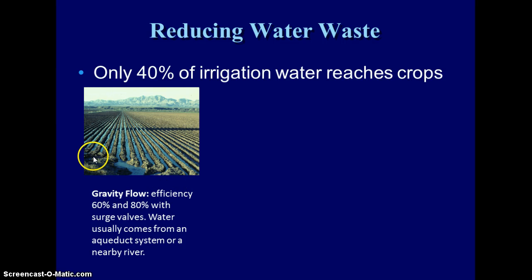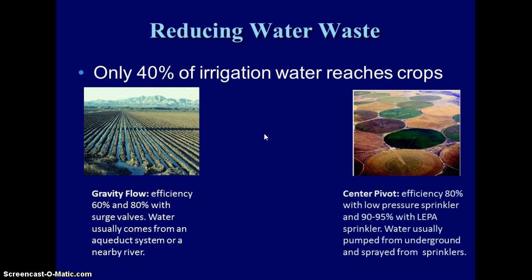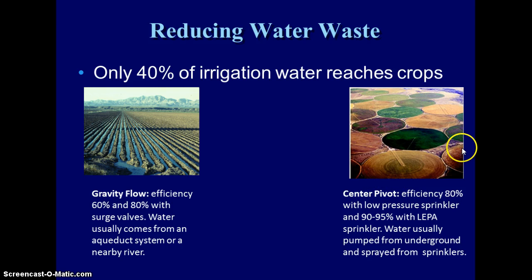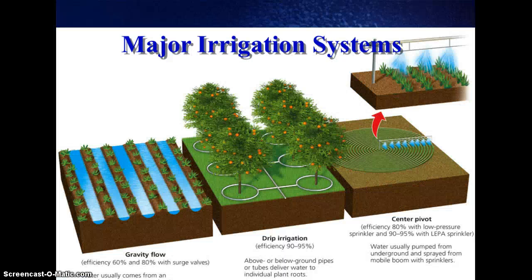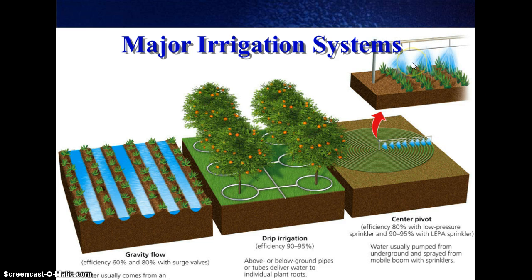With gravity flow irrigation, rows are set to go downhill and water flows between the rows, usually brought in by an aqueduct system from a nearby river. Center pivot irrigation — if you've ever flown over the Midwest and seen circular cropland — pivots around a center point and stays very low to the ground to reduce evaporation. The most efficient method is drip irrigation, which puts soaker hoses right at the roots of the plants. Gravity flow is 60 to 80% efficient, drip irrigation is 90 to 95% efficient, and center pivot is usually around 80% efficient.